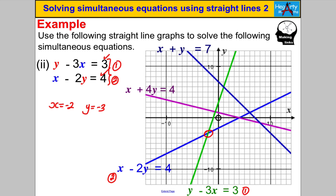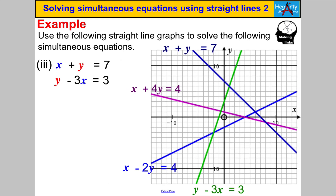Next one — pause and have a go. x + y = 7 is this line here and y − 3x = 3 is this one here. Where does the dark blue line and this green line intersect? They intersect here: x = 1, and counting up — 1, 2, 3, 4, 5, 6 — y = 6. Try it and you get the right answers.